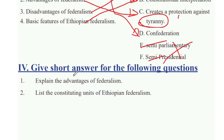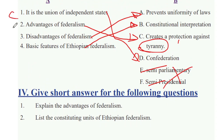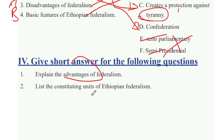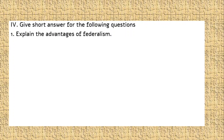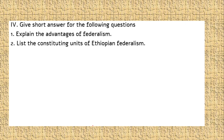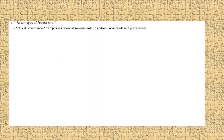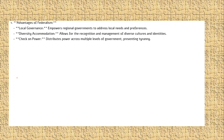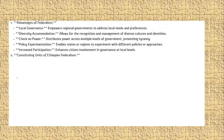If you are interested in this video, you will see the link in the description below. There is an advantage of federalism related to the constitution and the objectives of federalism. The advantages of federalism include: local governance, diversity, check of power, policy experimentation, and increased participation. Local governance and diversity are among the most important features in this context.